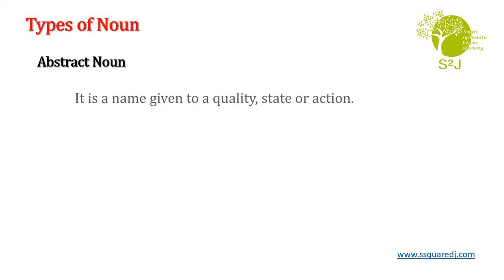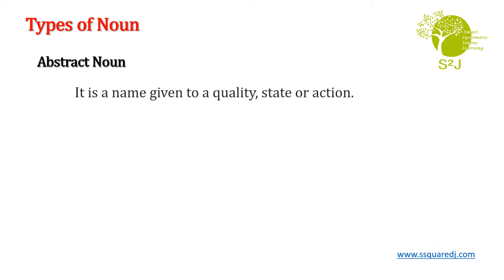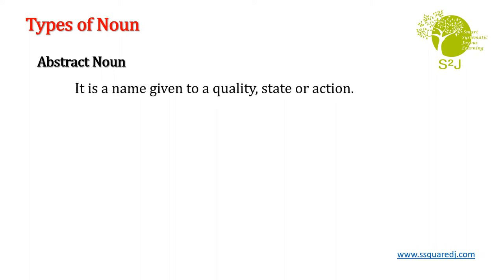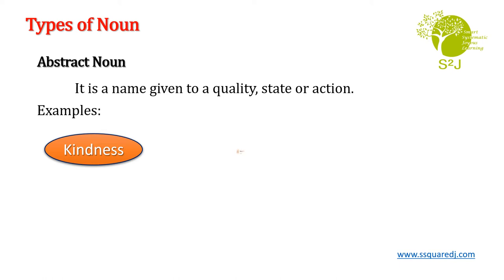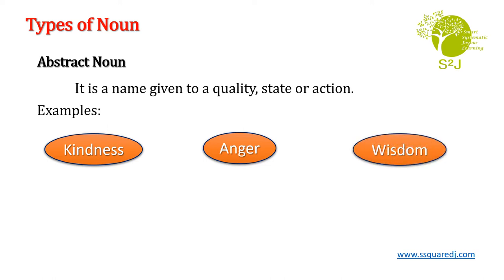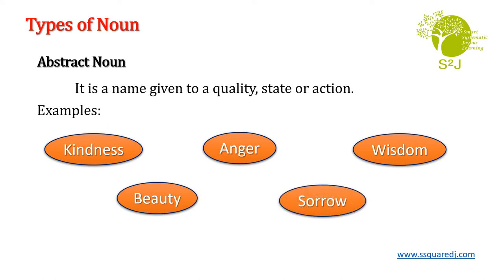You can see: cleanliness is next to godliness. Here, cleanliness and godliness both are abstract nouns. Let us see some more examples. Kindness is a quality, so it is also an abstract noun. Other examples include: anger, wisdom, beauty. All these words are in abstract noun form.